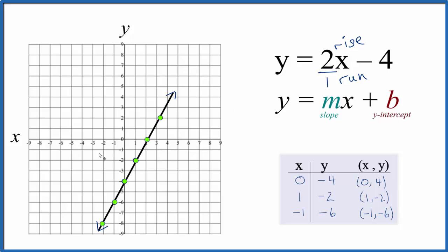So this is the correct line, the correct graph, for y equals 2x minus 4. And this is Dr. B, thanks for watching.